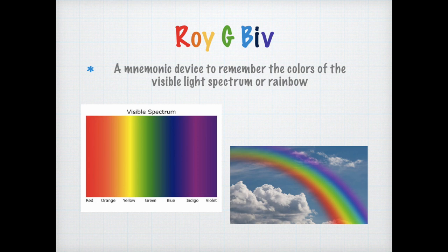ROYGBIV — this is a great way to remember the colors of the rainbow. R stands for red, O stands for orange, Y stands for yellow, G stands for green, B represents blue, I is indigo, and V is violet.